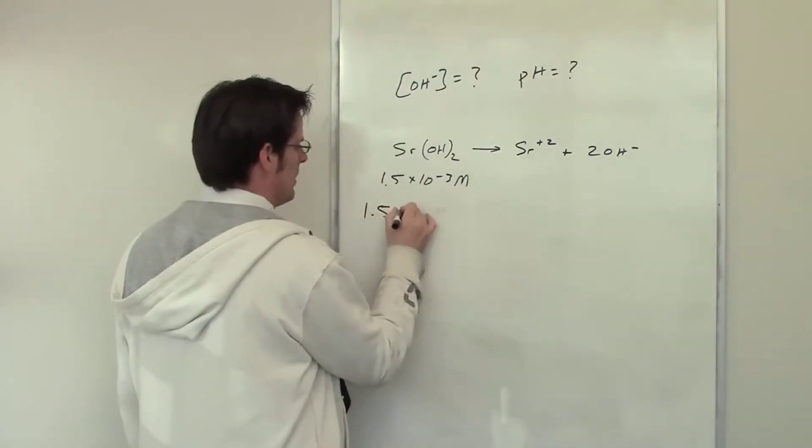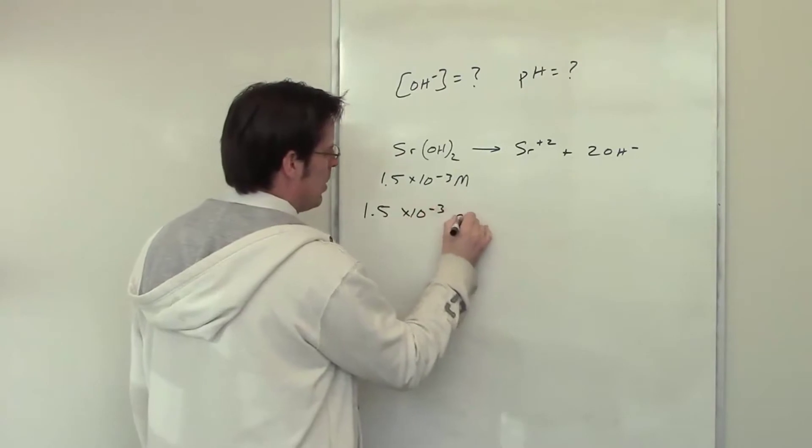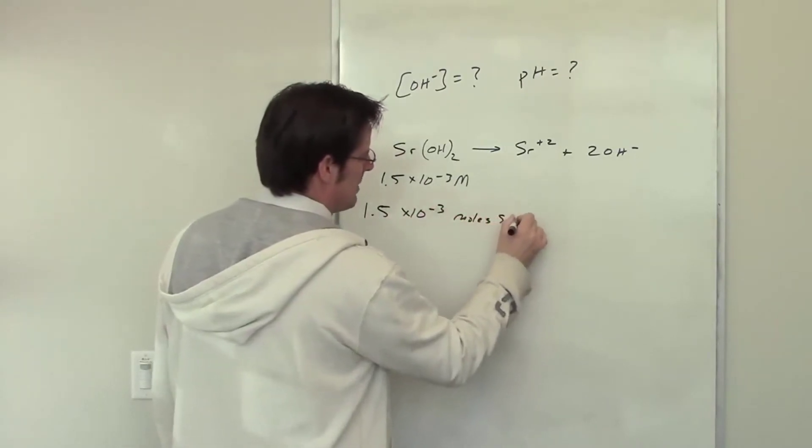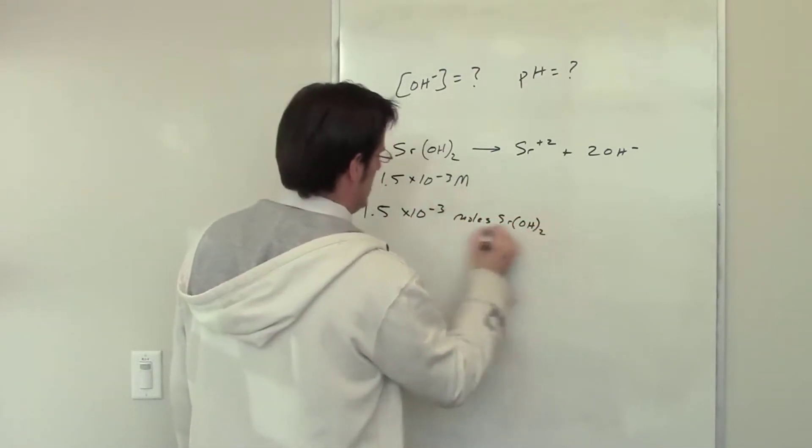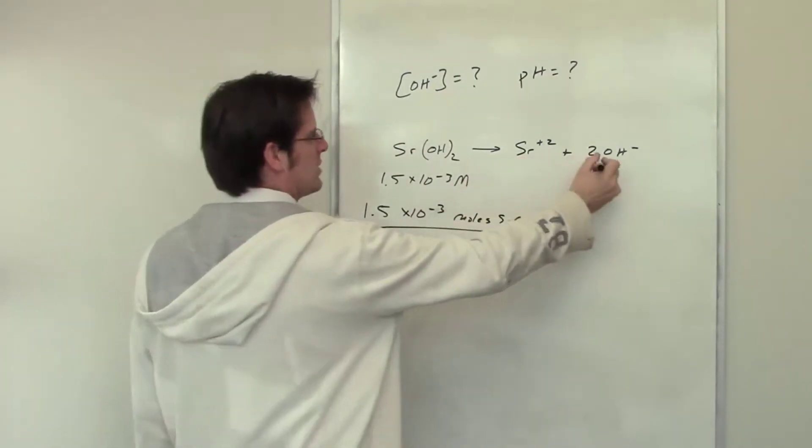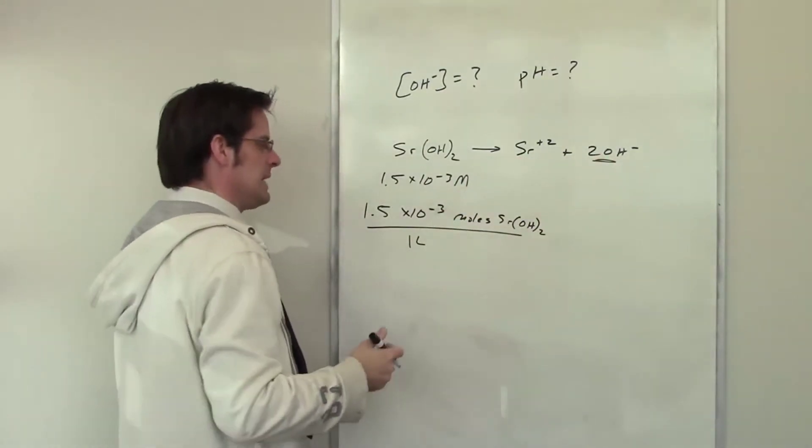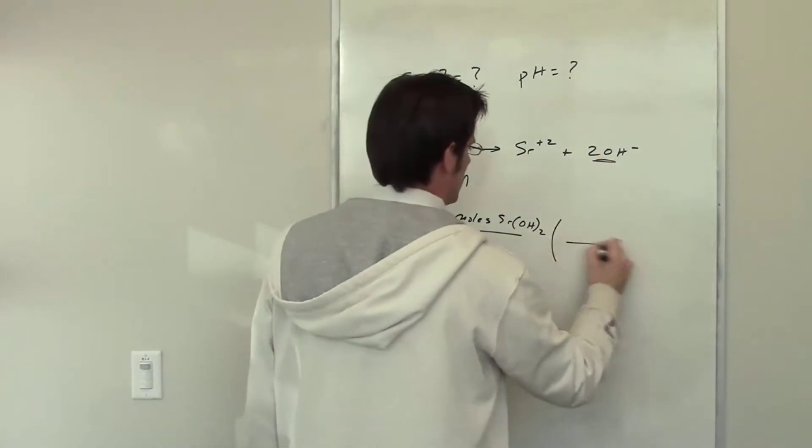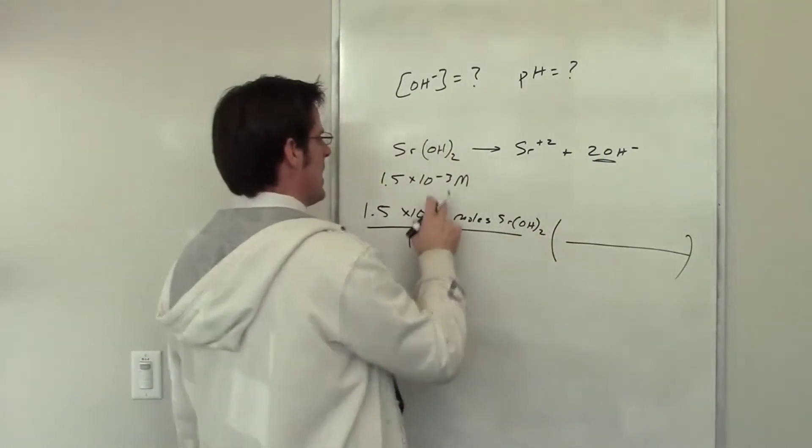If I have 1.5 times 10 to the negative third moles of strontium hydroxide in one liter, how many moles of hydroxide per liter is that going to end up giving me? What I'll do is I'll use dimensional analysis.